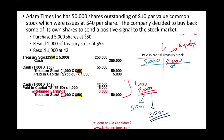This is one important thing to be aware of regarding retained earnings. Net income increases retained earnings; net loss reduces retained earnings; dividends reduce retained earnings; and treasury stock losses can also reduce retained earnings. The only thing that should increase retained earnings is net income. That's the illustration of treasury stock.